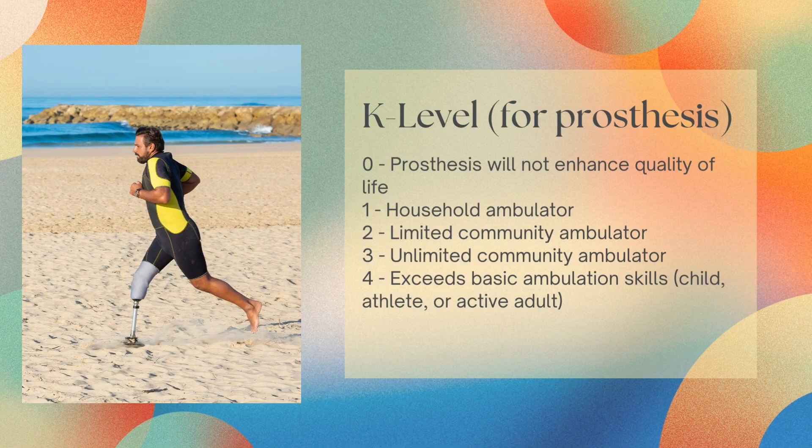First we're going to go over K-level, which is a scale for prosthetics. Zero is when a prosthetic will not enhance the quality of life for your patient. One is a household ambulator. Two is a limited community ambulator, so they have difficulty navigating uneven ground and steps.